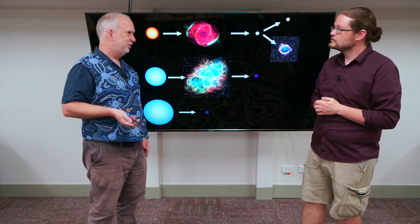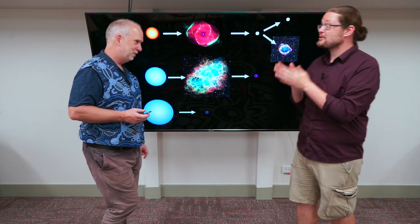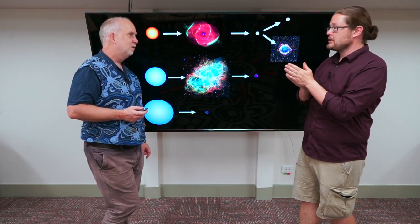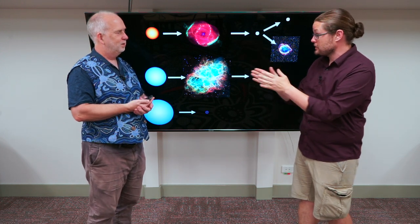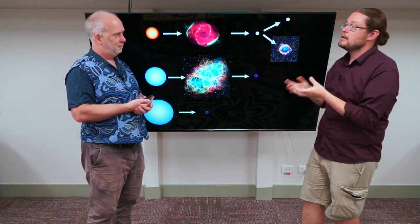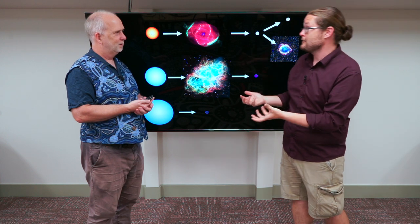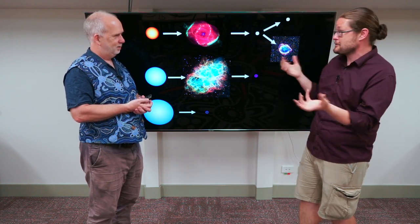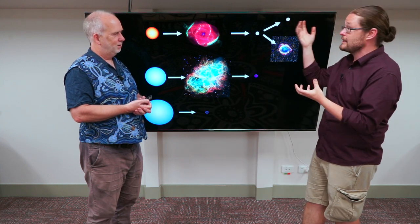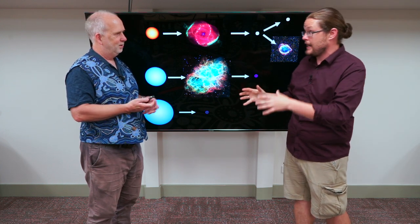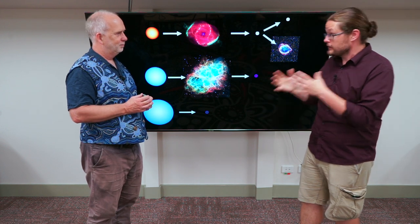But there are even worse things that can happen, right? This is your specialty. If you actually accrete too much material, you get these layers and you reach a certain limit, a limit we've talked about before, the Chandrasekhar limit. You cannot support this degenerate pressure anymore. This white dwarf really wants to collapse, but the atoms or the electrons now inside the white dwarf don't allow this to happen. It physically becomes unstable.